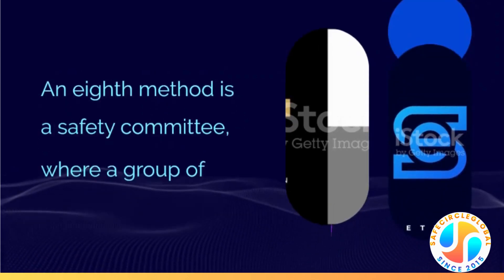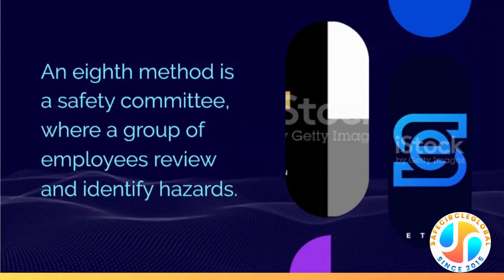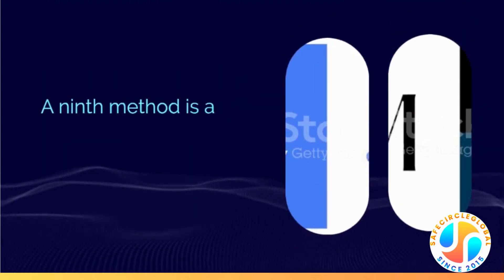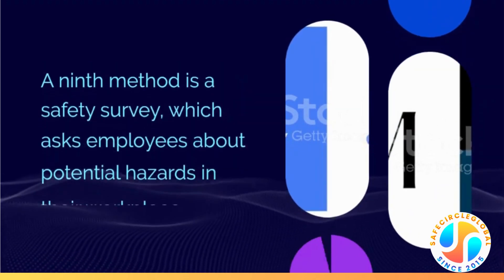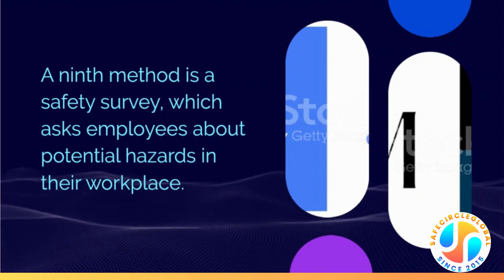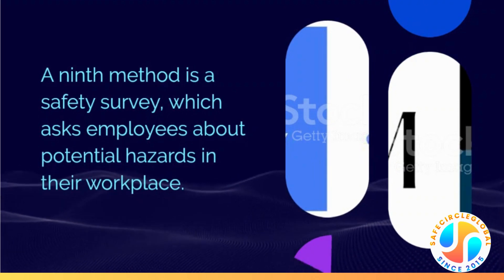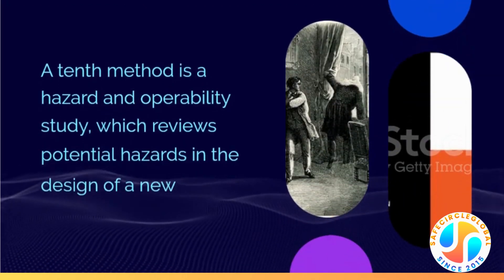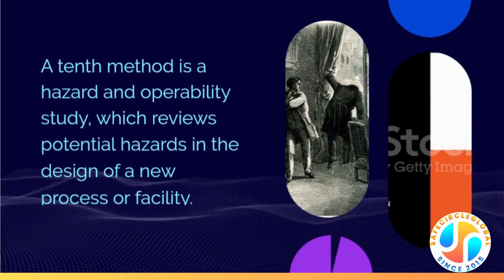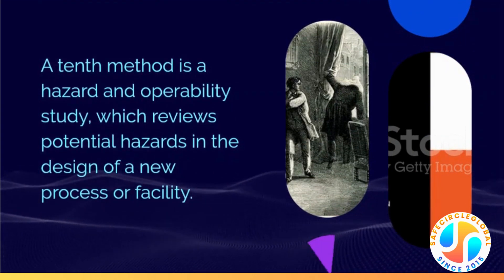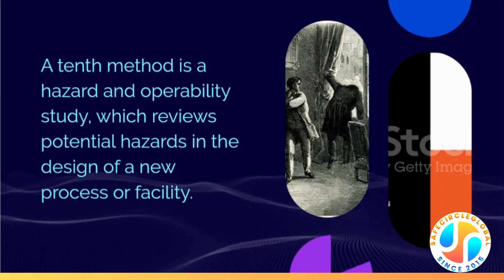An eighth method is a safety committee, where a group of employees review and identify hazards. A ninth method is a safety survey, which asks employees about potential hazards in their workplace. A tenth method is a hazard and operability study, which reviews potential hazards in the design of a new process or facility.